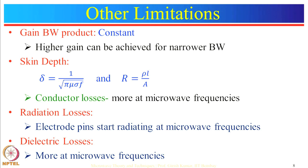At microwave frequencies, conventional tubes start resonating, and for a resonant circuit the gain-bandwidth product is constant. So to achieve higher gains we must compromise on bandwidth. This limitation of conventional tubes can be overcome by microwave tubes using reentrant cavities or slow wave structures.